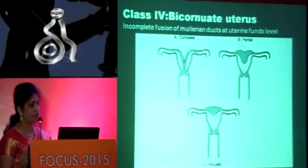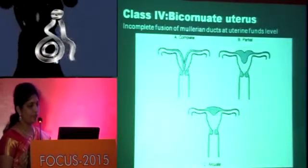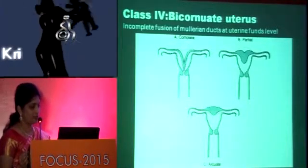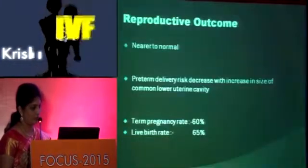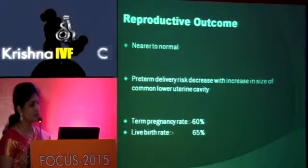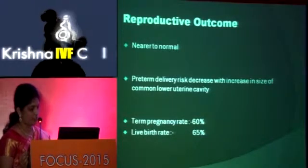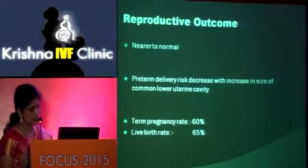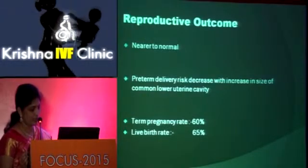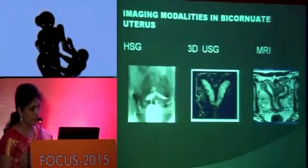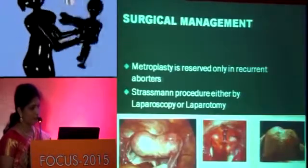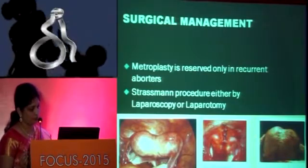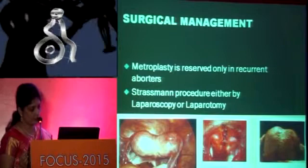Class 4 is the bicornuate uterus — incomplete fusion of the Mullerian duct at the uterine fundus level, resulting in varying degrees of separation of the two horns. Reproductive outcome is almost near normal, and preterm delivery risk decreases with increasing size of the common lower uterine cavity. Term pregnancy rate is 60% and live birth rate 65%. 3D ultrasound and MRI are diagnostic. Metroplasty is reserved only for recurrent abortions, performed as the Strassman procedure by laparoscopy or laparotomy.